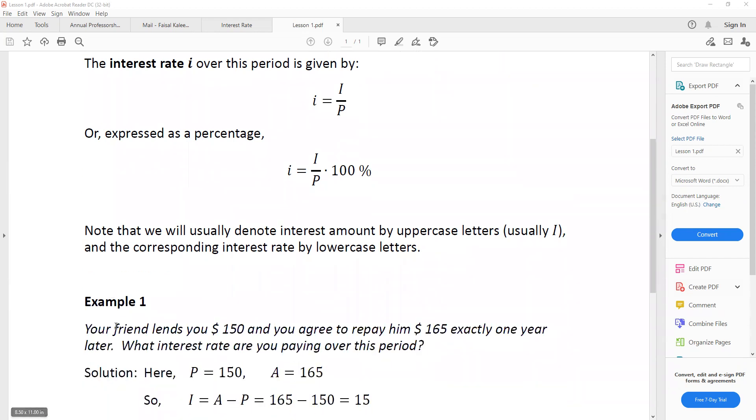So let's do an example. Your friend lends you $150 and you agree to repay him $165 at the end of one year. What is the interest rate?